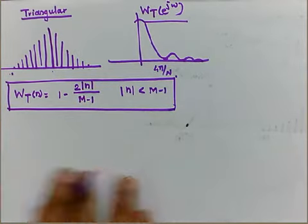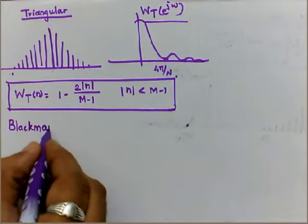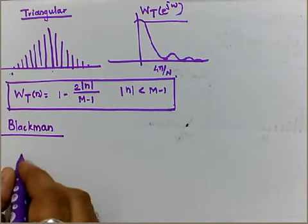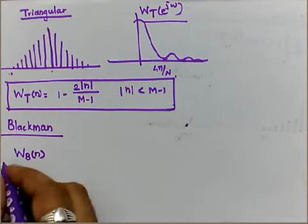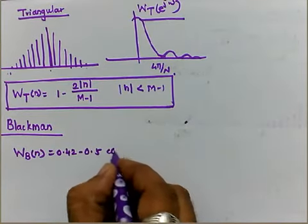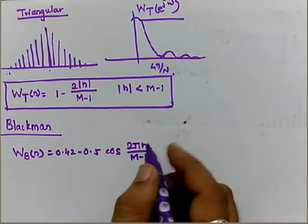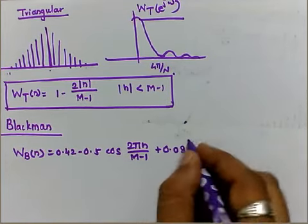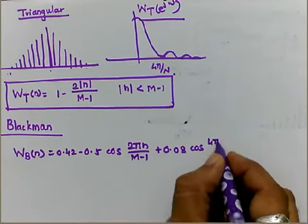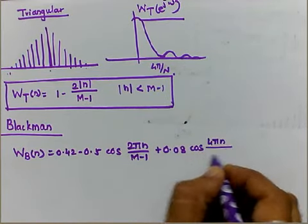Similarly we have another type of window — the Blackman window. For the Blackman window, the function W_B(n) is given as: W_B(n) = 0.42 - 0.5·cos(2πn / (M-1)) + 0.08·cos(4πn / (M-1)), for n ranging from 0 to M-1. The response is almost the same as that of the earlier cases.